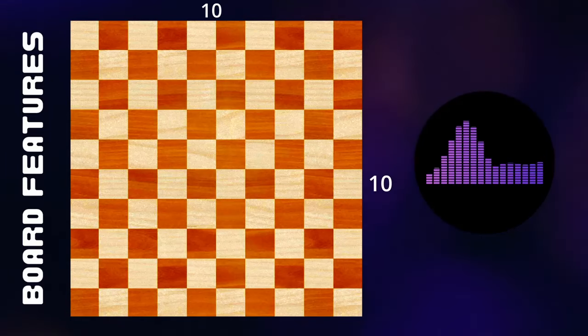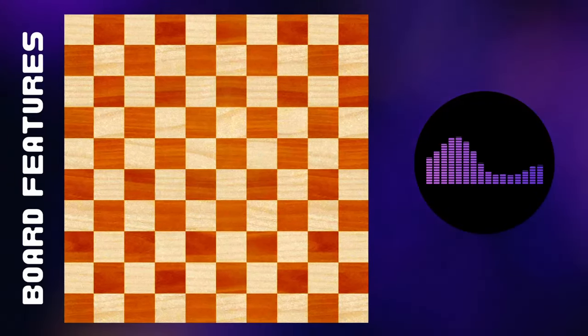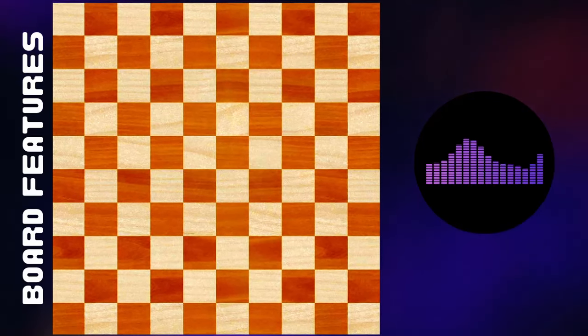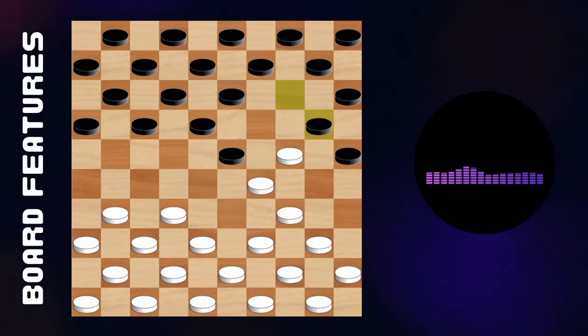In Ghana, the board is a 10x10 square made up of 100 smaller squares. 50 of these smaller squares are dark and the other 50 are white. The game is played on the dark squares, so they become the active squares on the board.